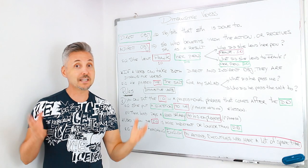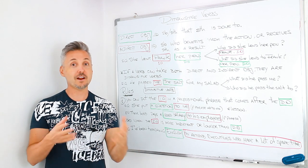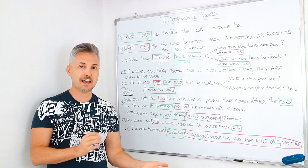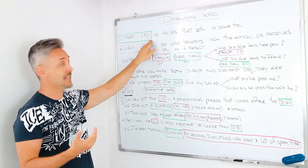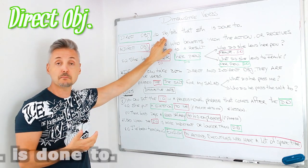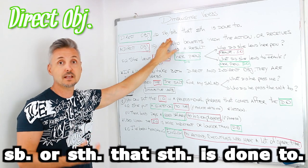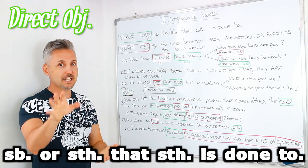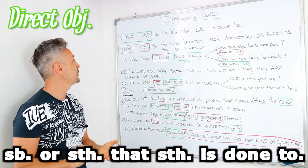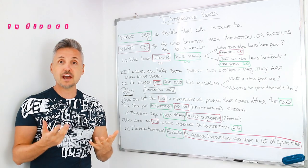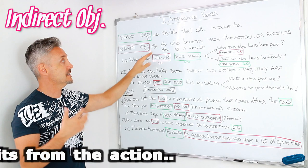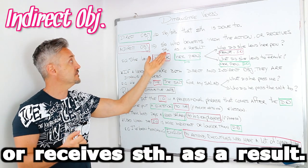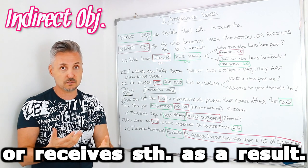So, the transitive verbs — what are they? Let me explain first what a direct and indirect object is. A direct object is somebody or something that something is done to. The indirect object instead is somebody who benefits from the action or receives something as a result.